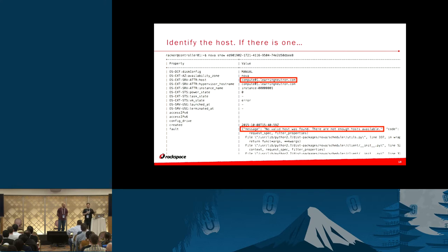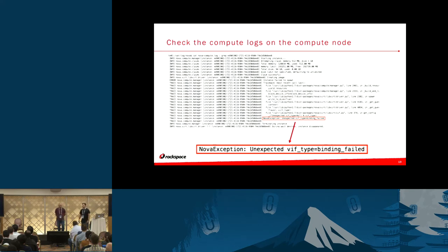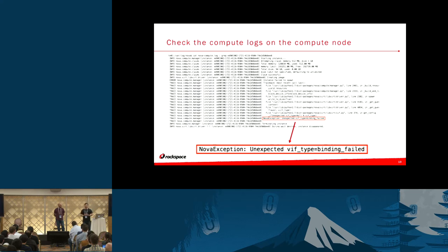Since it's been scheduled to a compute node, the easiest thing to do is hop over to that compute node and start looking at the nova-compute logs and your neutron agent logs. In this case, when we created this particular error, we get another stack trace in the nova-compute log — this time a Nova exception: 'unexpected vif type equals binding failed.' When Nova creates a virtual machine it has to plug each of the virtual network interfaces into a virtual bridge, and that virtual network interface is known as a VIF.